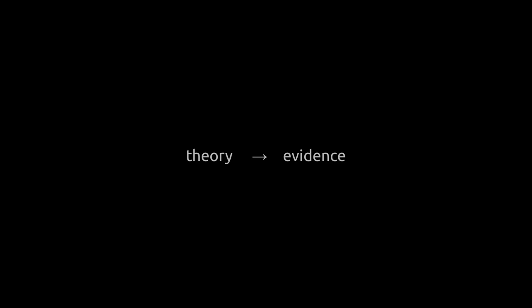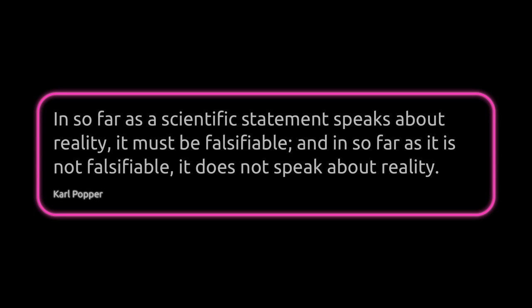Popper argued for falsification. Whereas induction begins with a collection of evidence and proceeds to generate theories, Popper said that scientists do the opposite. They begin with a theory and they compare it with evidence. But rather than seeking out evidence that would confirm the theory, he said, they seek out evidence that will disprove it. As in the example of the white swans, the theory that all swans are white can be disproved by a single piece of evidence, a single black swan. Popper said, insofar as a scientific statement speaks about reality, it must be falsifiable. And insofar as it is not falsifiable, it does not speak about reality. What distinguishes science from non-science in Popper's mind is that science can be tested, and those tests could potentially turn out to fail if the theory doesn't correspond with reality.